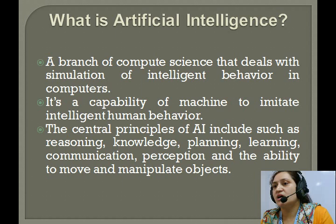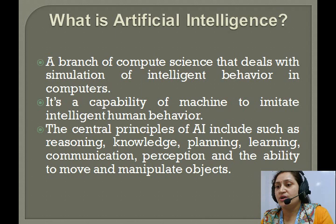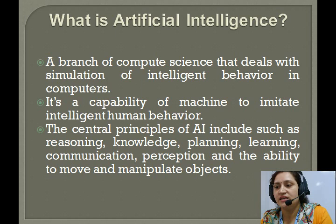Now let us come to the topic we are supposed to discuss, that is, what is artificial intelligence? Artificial intelligence is said to be a branch of computer science that deals with a simulation of intelligent behavior in computers. It is the capability of a machine to imitate intelligent human behavior. The central principles of AI include reasoning, knowledge, planning, learning, communication, perception, and the ability to move and manipulate objects.